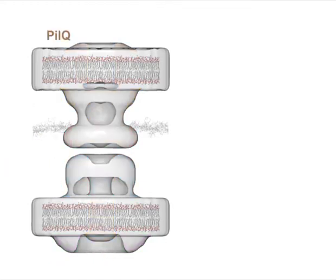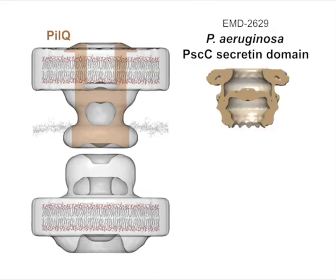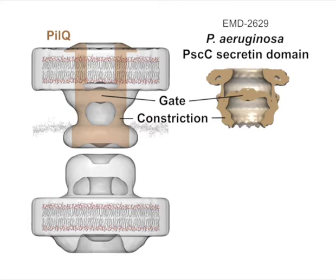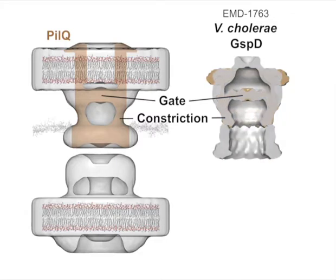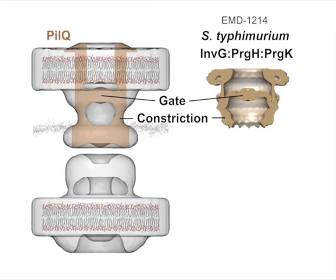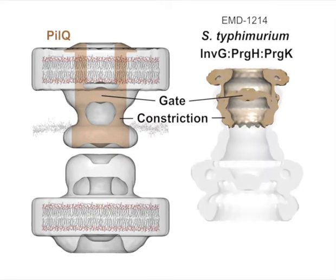We started by analyzing PLQ. There is no complete crystal structure for PLQ, but there is a single-particle reconstruction of just the secretin domain. This in vitro structure exhibits a gate and constriction similar to those observed in the type 4 pilus machine. The same features are also conserved in single-particle reconstructions of other secretin-containing molecules, including a full-length PLQ homolog from the type 2 secretion system and the purified type 3 secretion system basal body.